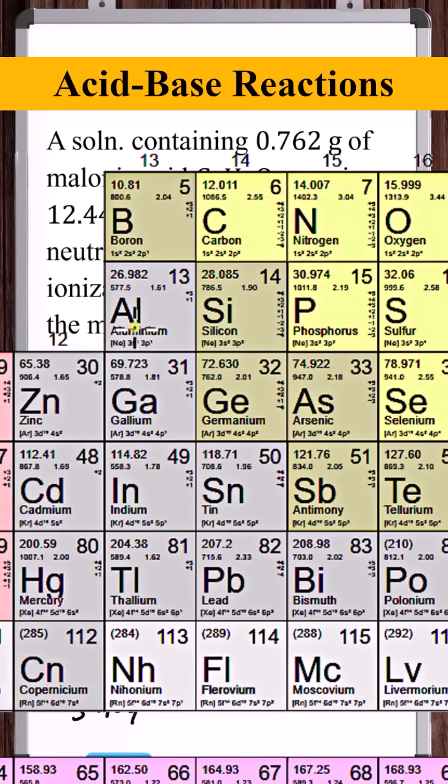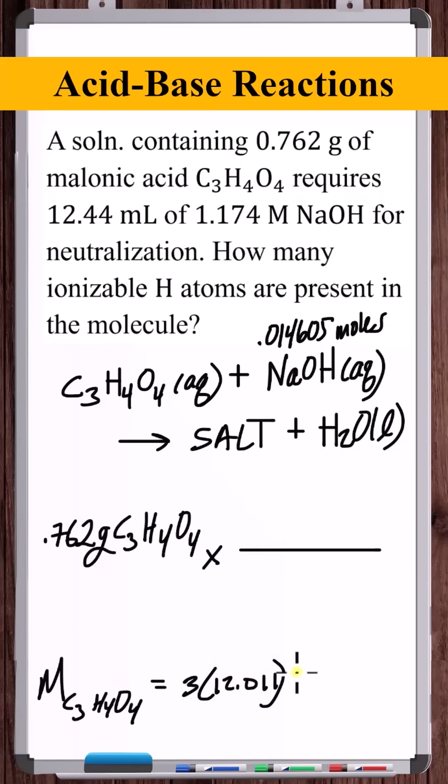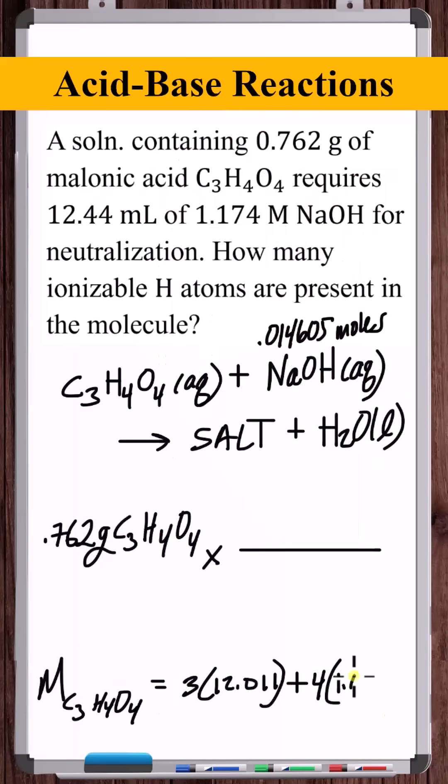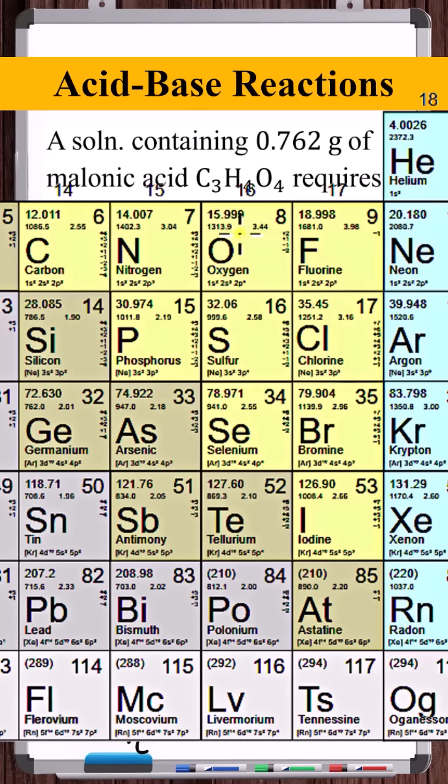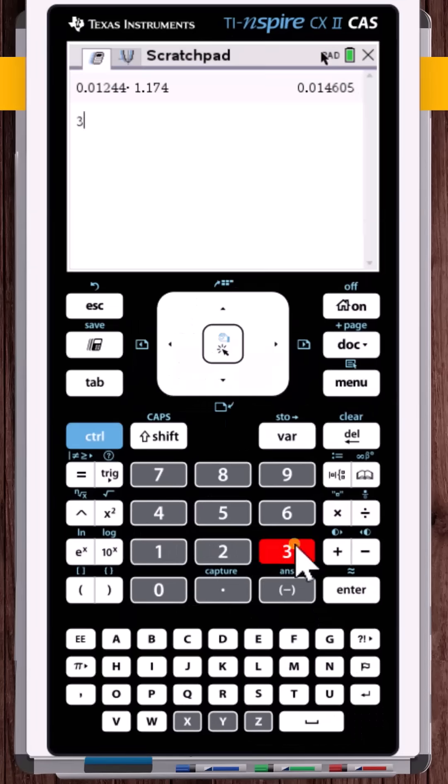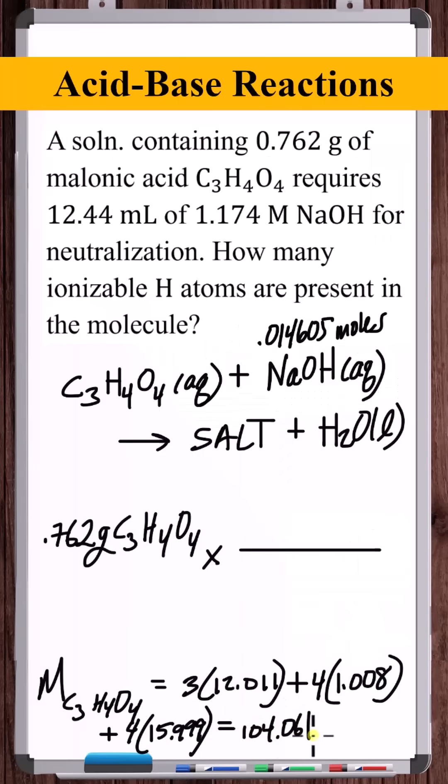Molar mass of carbon is 12.011, for hydrogens molar mass of hydrogen is 1.008, and for oxygens molar mass of oxygen is 15.999. Doing the addition, 104.061 grams per mole, that's grams of malonic acid for every mole of malonic acid.